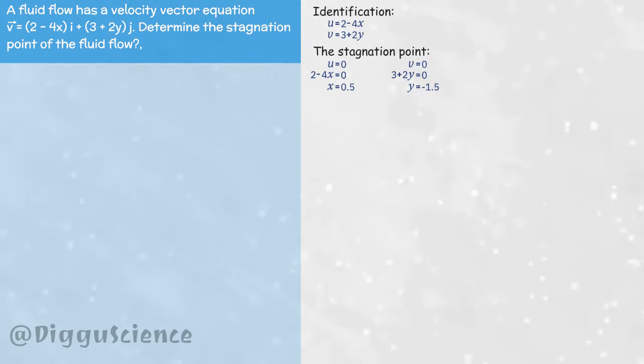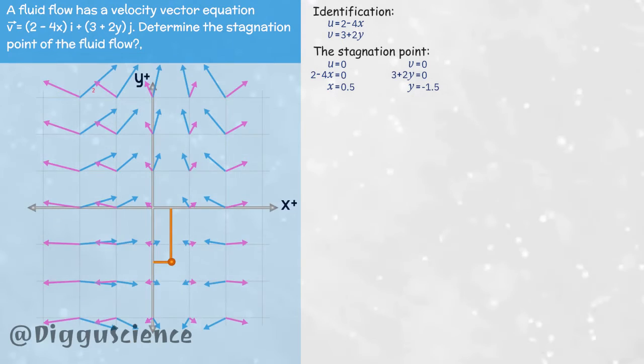This is the location of the stagnation point, 0.5, minus 1.5. We can plug these values into the velocity and acceleration plots from the previous problem. It can be seen that at the point 0.5, minus 1.5, no particles pass through.